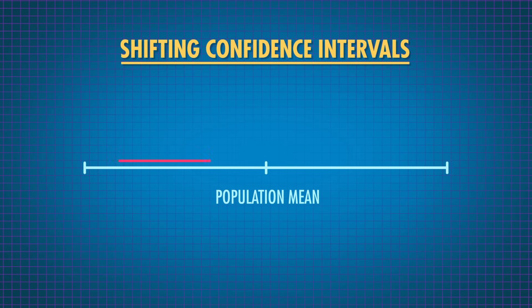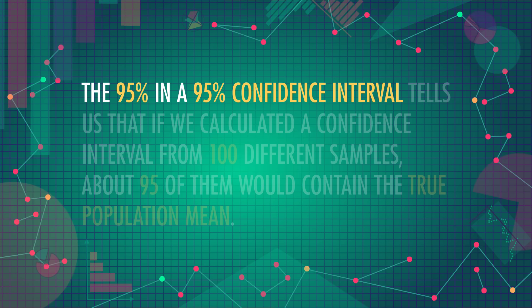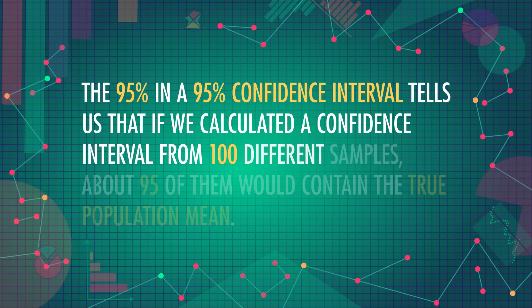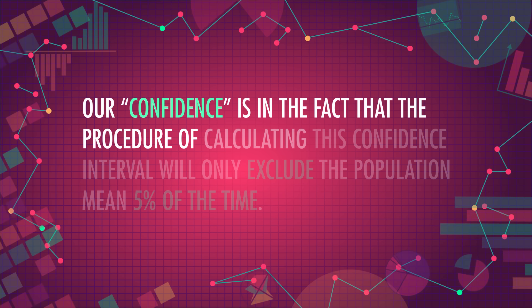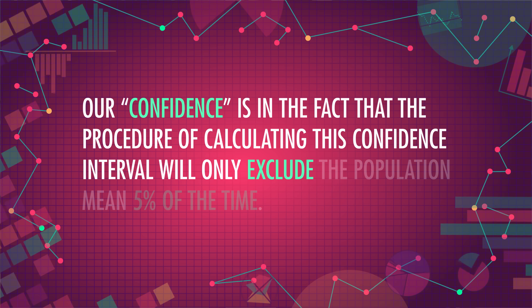The interpretation of a confidence interval is a bit more complex. To understand what a confidence interval really is, we have to ask ourselves: what if? If the dentist's sample was taken again, we wouldn't expect the mean and standard deviation of cavities to be exactly 3 and 0.5 — they'd probably be a little different. Which means our 95% confidence interval would be different than the one we got before. If we did it a hundred more times with the same sample size, we'd get a hundred slightly different confidence intervals. The 95% in a 95% confidence interval tells us that if we calculated a confidence interval from a hundred different samples, about 95 of them would contain the true population mean. Our confidence is in the fact that the procedure of calculating this confidence interval will only exclude the population mean 5% of the time. That definition implies that it is possible that the confidence interval we created doesn't include the true population mean.